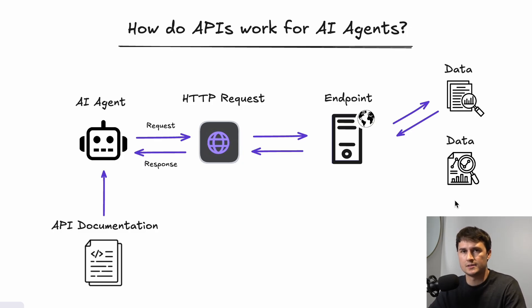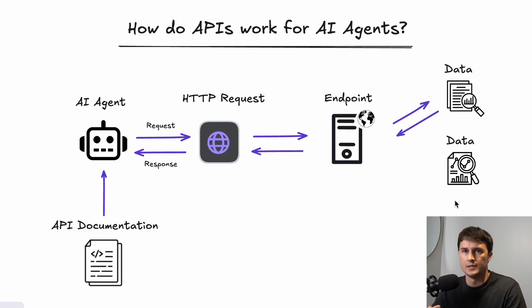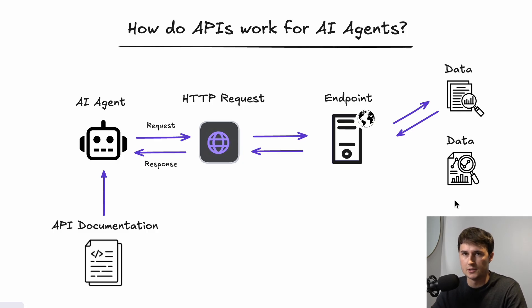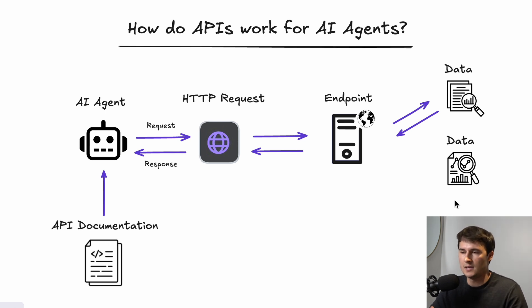Once equipped with that API documentation, the AI agent creates an HTTP request and sends it out. That request travels to an endpoint — which you can think of as the kitchen — a digital server waiting for instructions. The endpoint processes the request, retrieves the relevant data, and sends it back as a response. Finally, the AI agent reads that response and uses the information to perform its task.